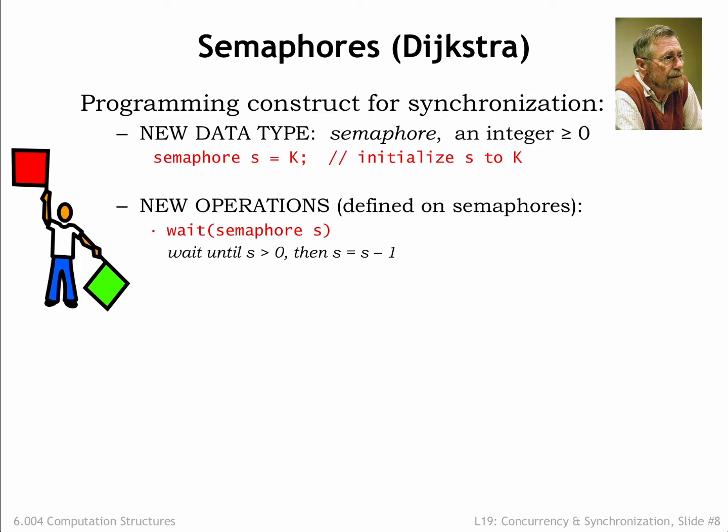The semaphore is accessed with two operations: wait and signal. The wait operation will wait until the specified semaphore has a value greater than zero, then it will decrement the semaphore value and return to the calling program. If the semaphore value is zero when wait is called, conceptually execution is suspended until the semaphore value is non-zero. In a simple, inefficient implementation, the wait routine loops, periodically testing the value of the semaphore, proceeding when its value is non-zero.